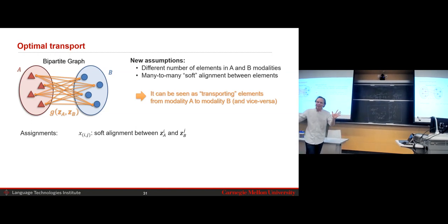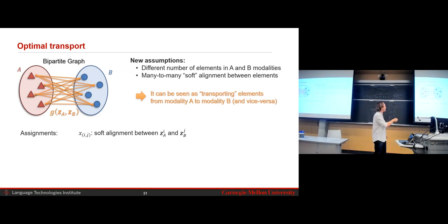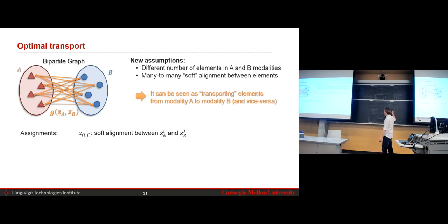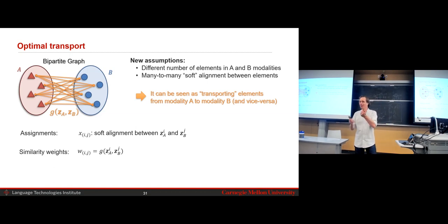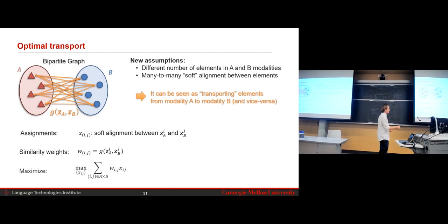In canonical time warping, the weights decide which elements to assign to which, while U and V are learned to make the embeddings as correlated as possible. You do both alignment and representation at the same time. To optimize, it's a chicken-and-egg problem: freeze the representation and optimize for alignment, then freeze the alignment and optimize for the representation. This alternating optimization lets you jointly learn the alignment and the cross-modal embeddings.